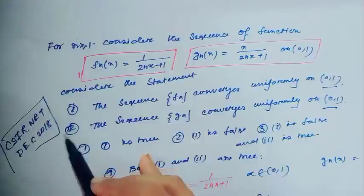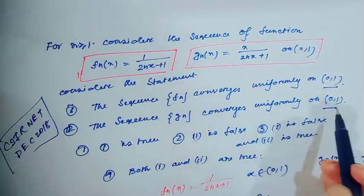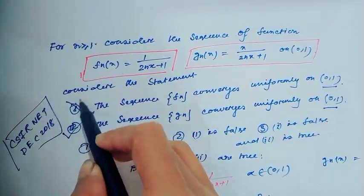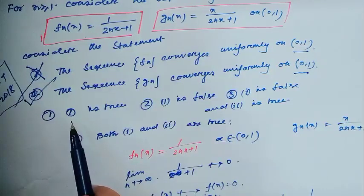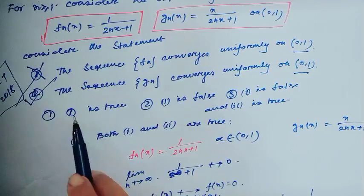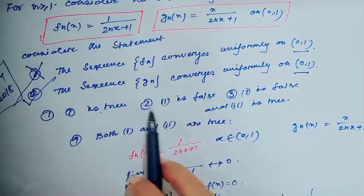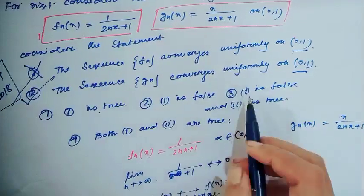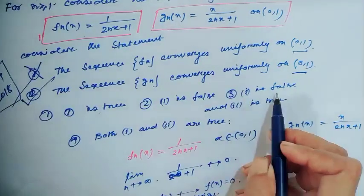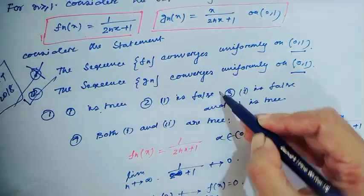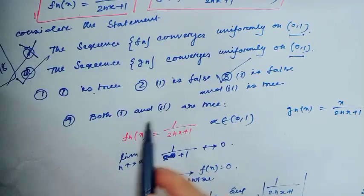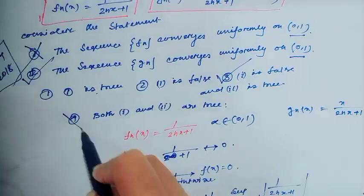That means only gn converges uniformly on the open interval (0,1), and fn is not uniformly convergent. Looking at the options: option 1 states statement 1 is true — this is wrong. Option 2 states statement 2 is false — this is also wrong. Option 3 states statement 1 is false and statement 2 is true — this is the correct option. Option 4 states both 1 and 2 are true — this is also a wrong option.